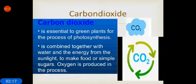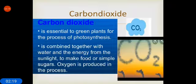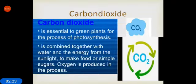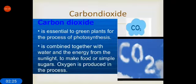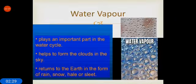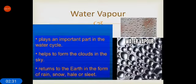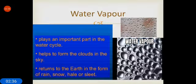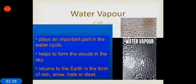Carbon dioxide is essential to green plants for the process of photosynthesis. It is combined together with the water and the energy from the sunlight to make food or simple sugars. Oxygen is produced in the process. Water vapors play an important part in the water cycle, help to form the clouds in the sky, and return to the earth in the form of rain, snow, hail and sleet.